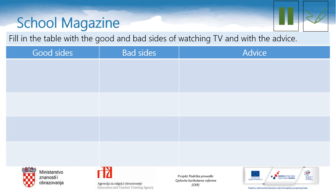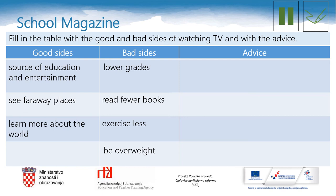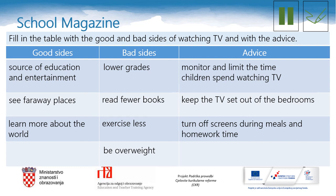Pause the lesson now and see you in a while. Welcome back. Let us check your answers. Good sides: TV is a source of education and entertainment; we can see far away places and learn more about the world. The bad sides: children can have lower grades, read fewer books, exercise less, and be overweight. And finally the advice: parents should monitor and limit the time children spend watching TV; they should keep the TV set out of the bedrooms and turn off screens during meals and homework time.